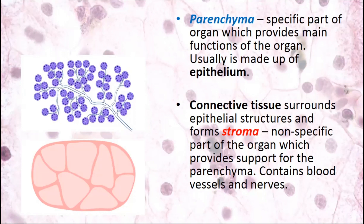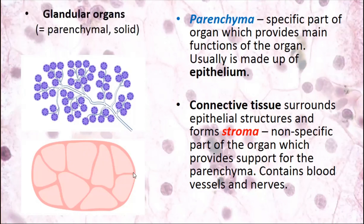When you answer about the structure of a parenchymal organ, you should mainly remember differences in the parenchyma, because stroma is similar everywhere. Stroma is connective tissue — loose, which usually forms lobules, and dense, which forms septa and capsule — plus intralobular loose fibrous connective tissue containing blood vessels and nerves, providing supportive and trophic functions. These organs are called glandular, parenchymal, or solid organs.